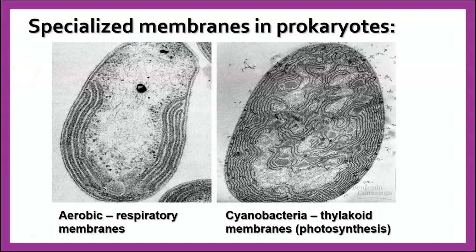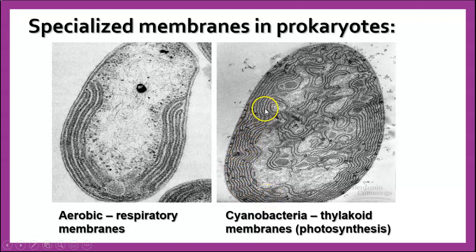Some prokaryotes have specialized membranes in them. There are respiratory membranes in some prokaryotes that actually seem like the inner membrane of the mitochondrion, involved in cellular respiration — things like the electron transport chain and ATP synthase, like we find in mitochondria. Cyanobacteria are photosynthetic bacteria that have internal membranes called thylakoid membranes, very similar to what you see in chloroplasts, with the same kinds of molecules — the electron transport chain, the photosystems — that you find in chloroplasts in plants.